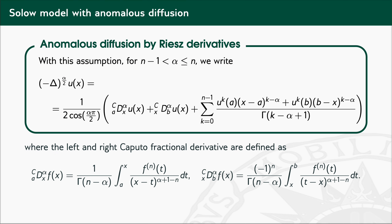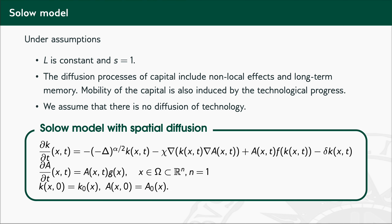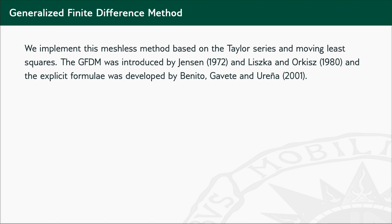In order to find the numerical solution of the Solow model with spatial and anomalous diffusion, we employ the Generalized Finite Difference Method (GFDM), which is a meshless method based on Taylor series and moving least squares. This meshless method was introduced by Jensen in 1972 and Liszka and Orkisz in the 1980s, and its explicit formulae were developed by Benito, Gavete, and Ureña in 2001.